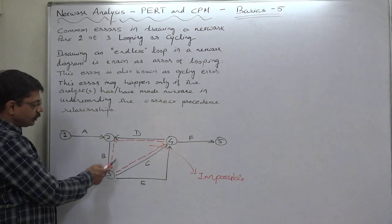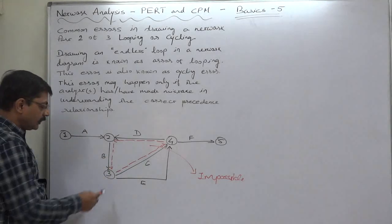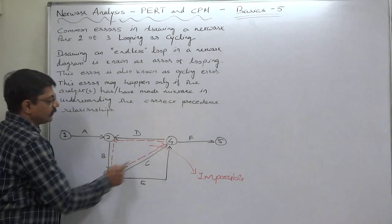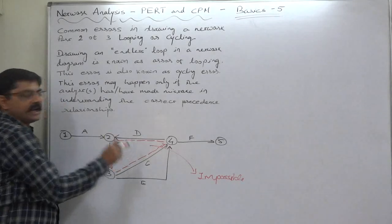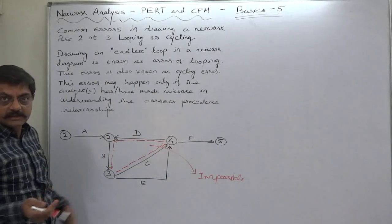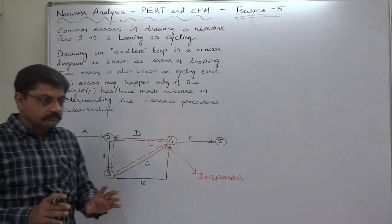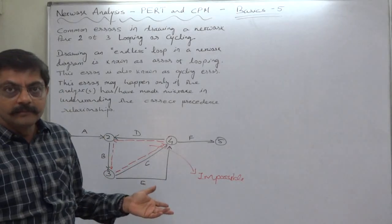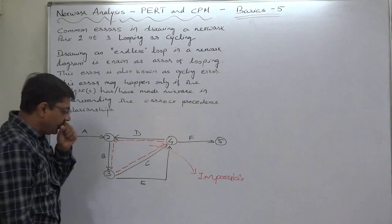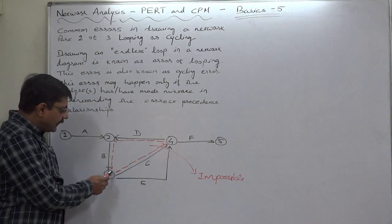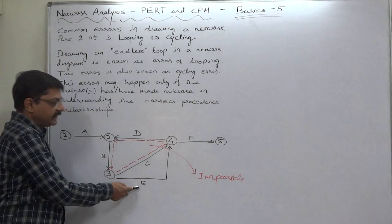Now see the situation of B, C and D. An infinite cycle, infinite loop is there. That means the project or these three events can never end. And if B cannot end, how can C or E start?